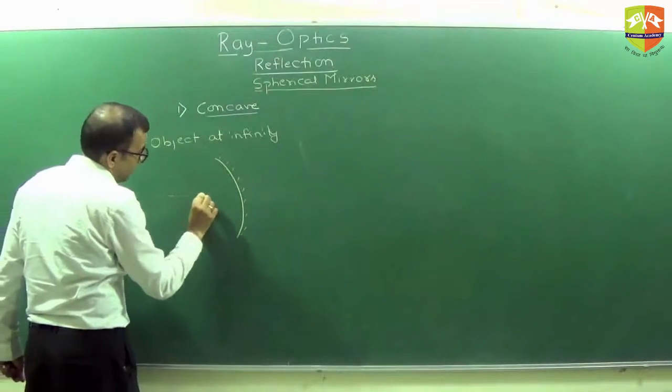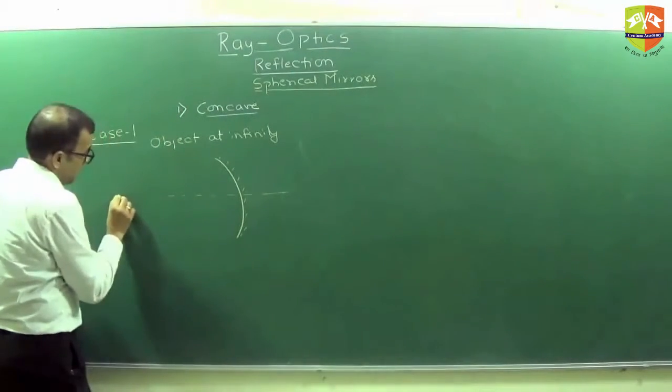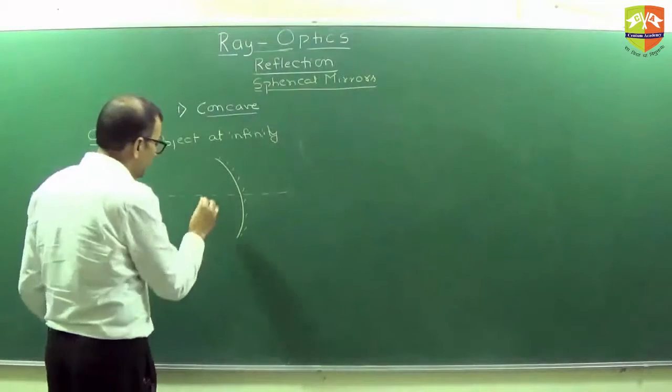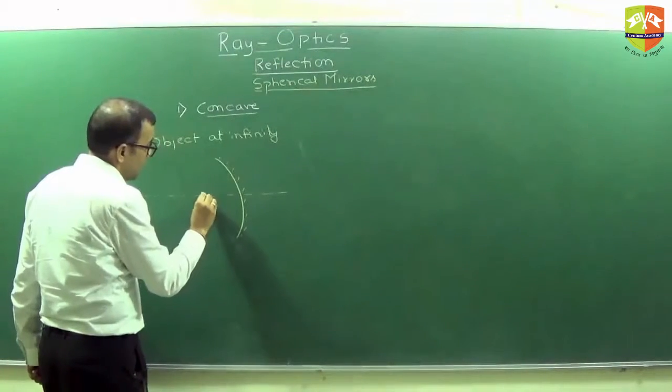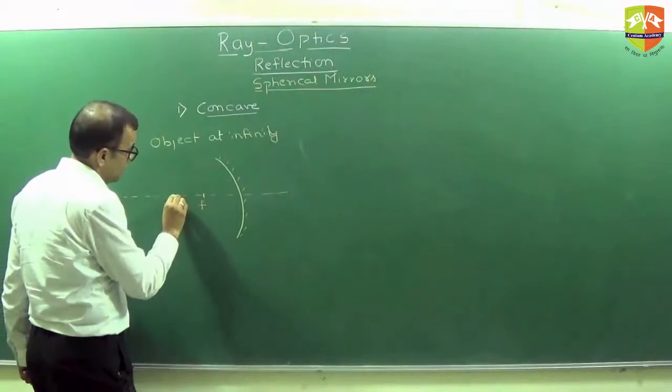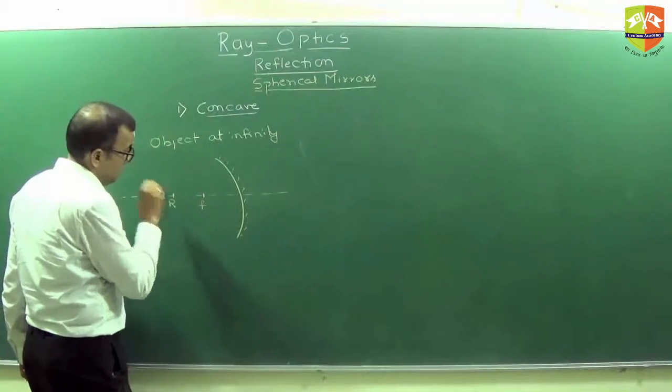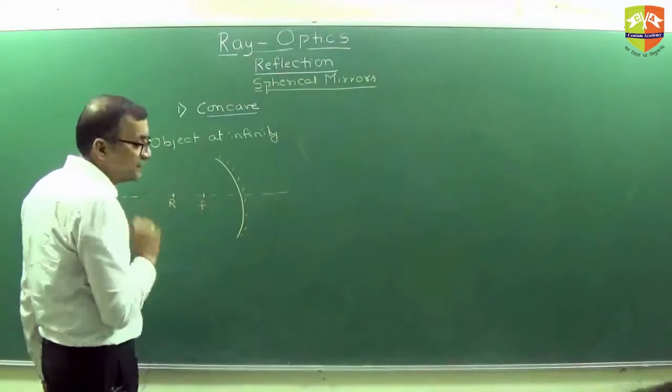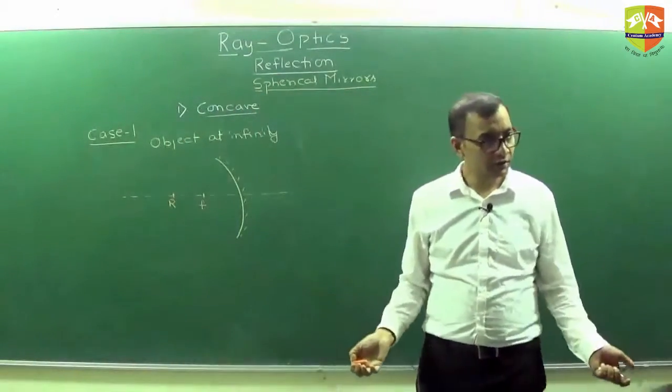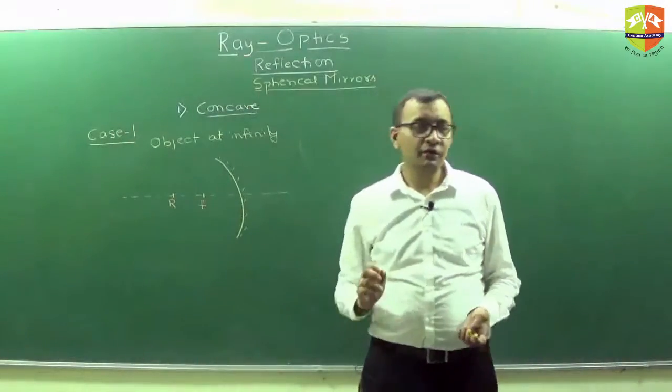This is the mirror, this is the principal axis, focus R. Object is at infinity, so where will the image be? Focus, right. So draw the ray diagram for that.